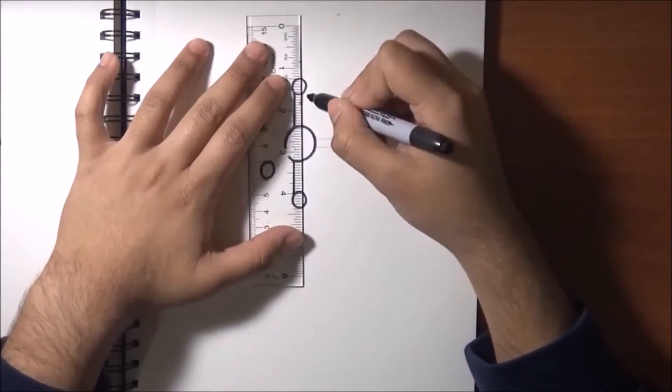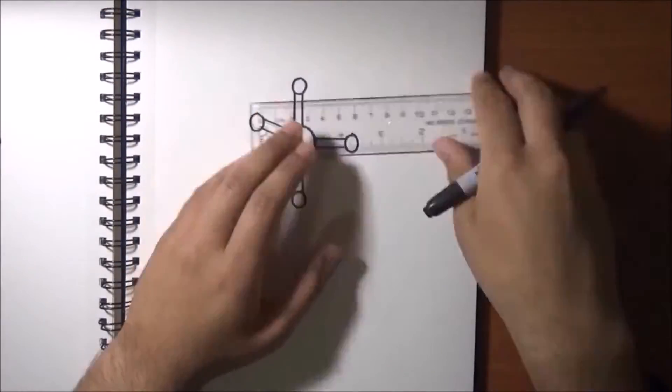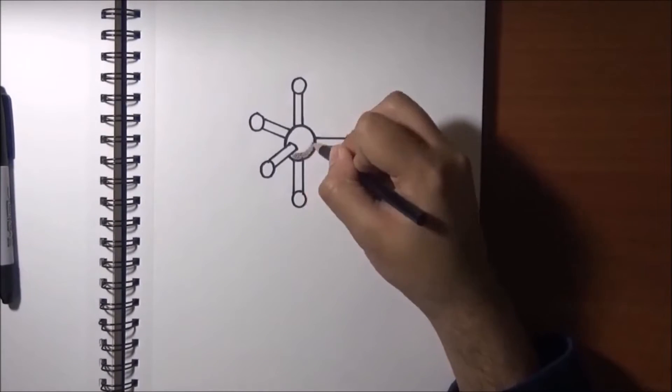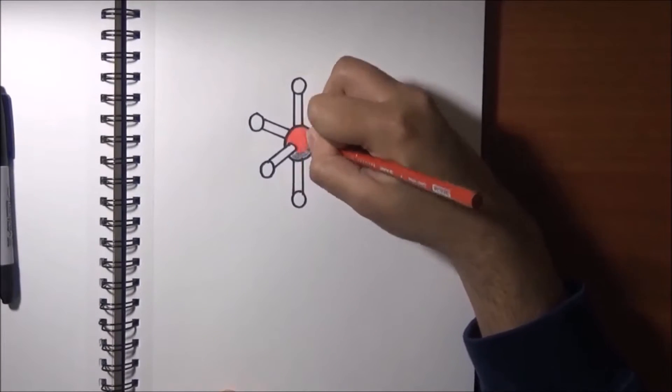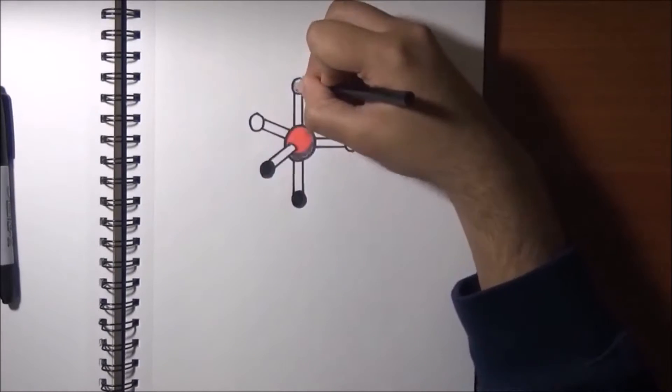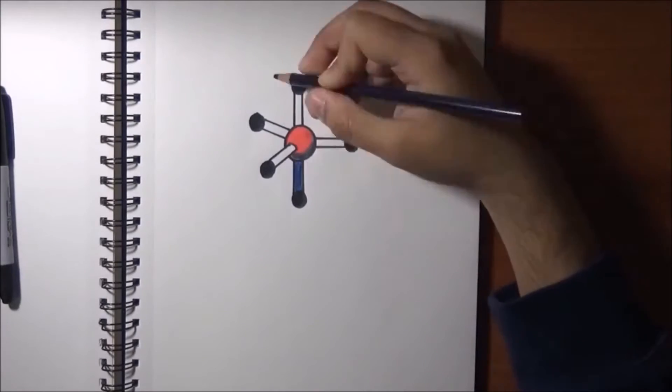The trigonal bipyramidal arrangement of electron groups forms bond angles of 90 degrees along the axis and 120 degrees otherwise. There are a total of four shapes including the main shape which falls under this class. Some examples of this shape are phosphorous pentachloride and phosphorous pentafluoride.